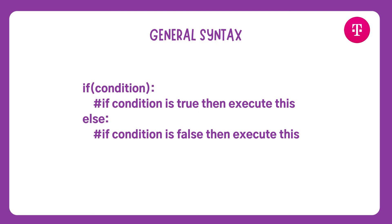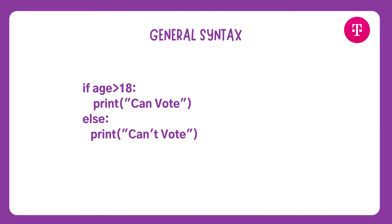Here is a simple example — a small logic for printing whether a person can vote or not. If the condition 'age greater than 18' is true, then 'can vote' is printed. If the condition is not true, the flow goes to the else part, which prints 'can't vote'. This is how simple if-else works in Python.